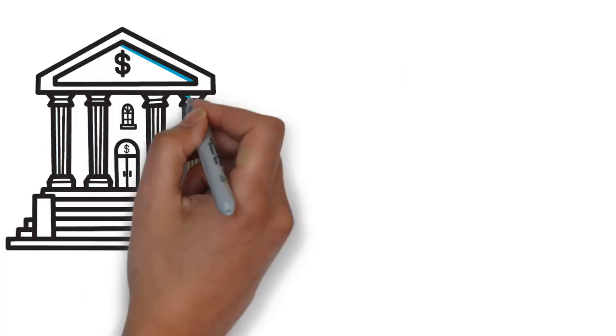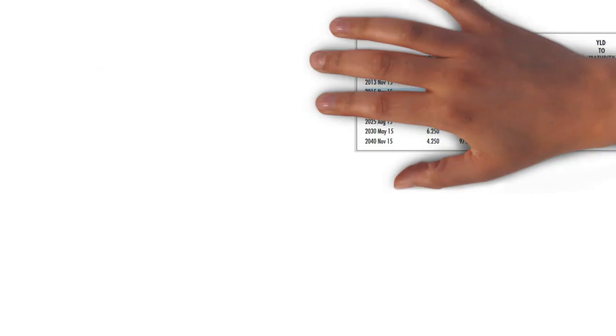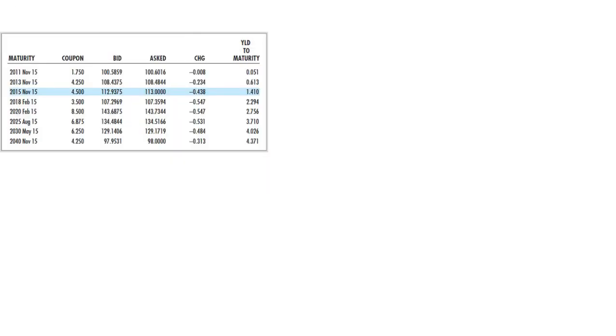Treasury bonds are debt obligations of the federal government with original maturities of one year or more. Here is an example of a listing of Treasury issues.